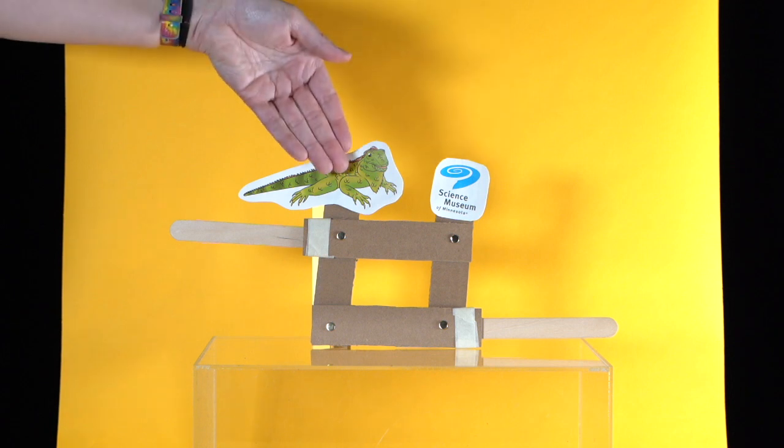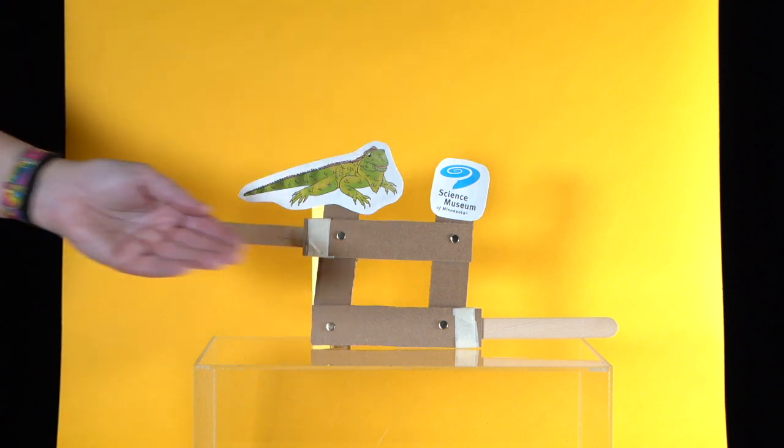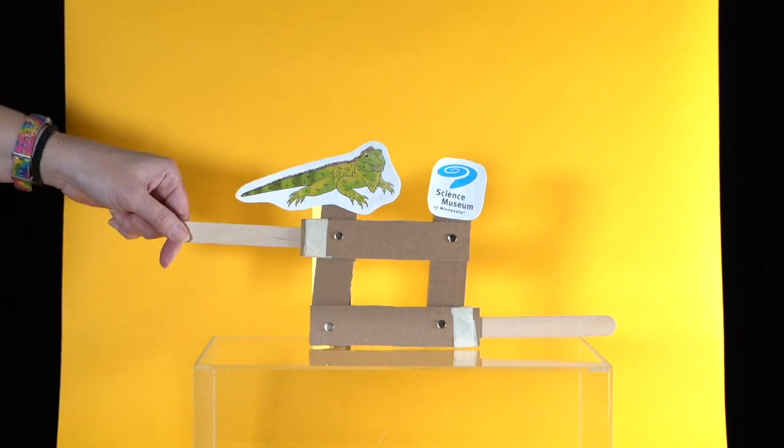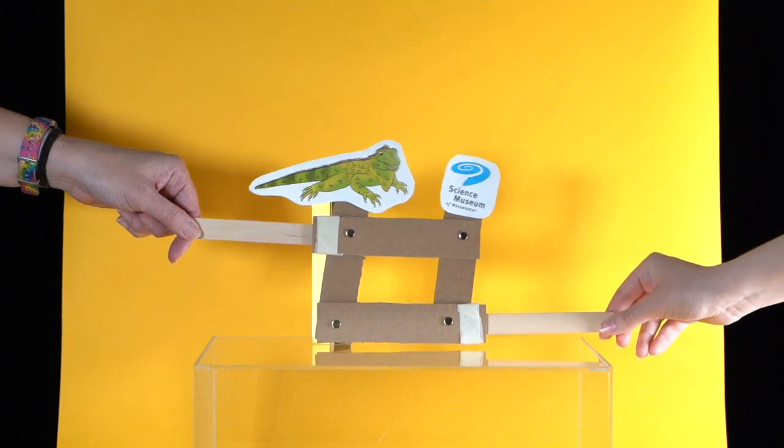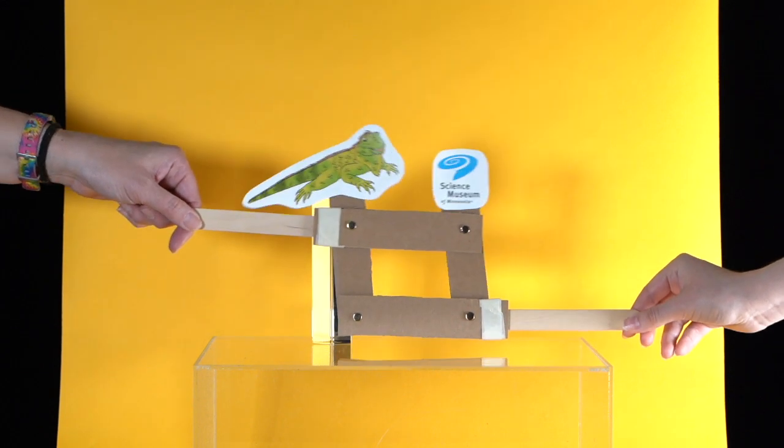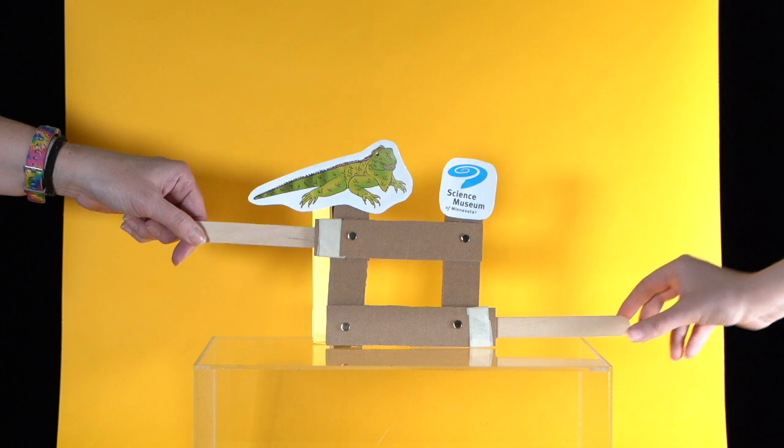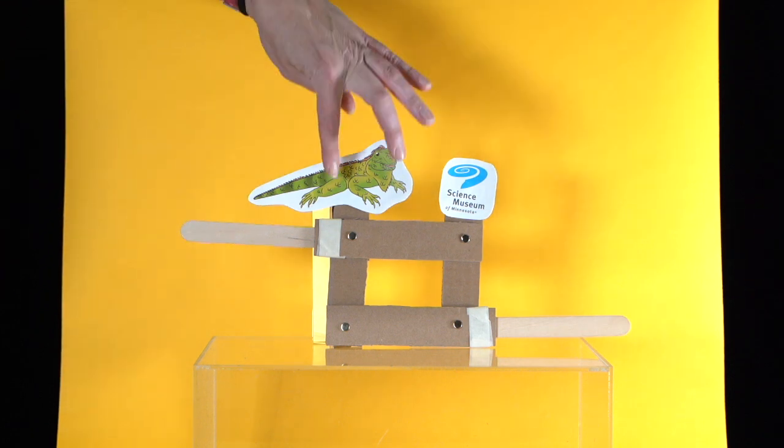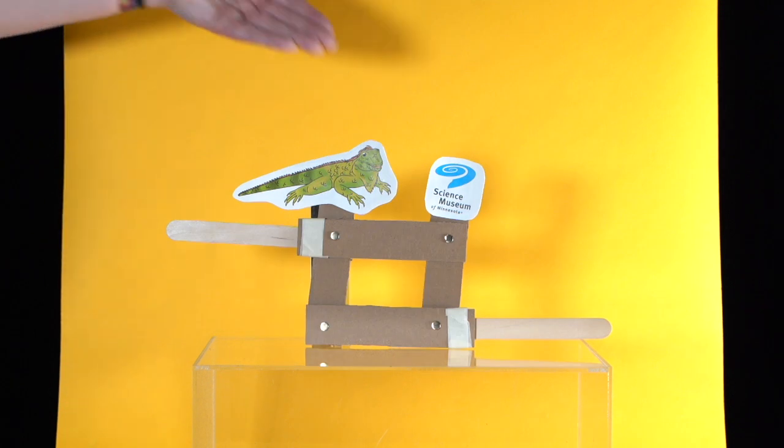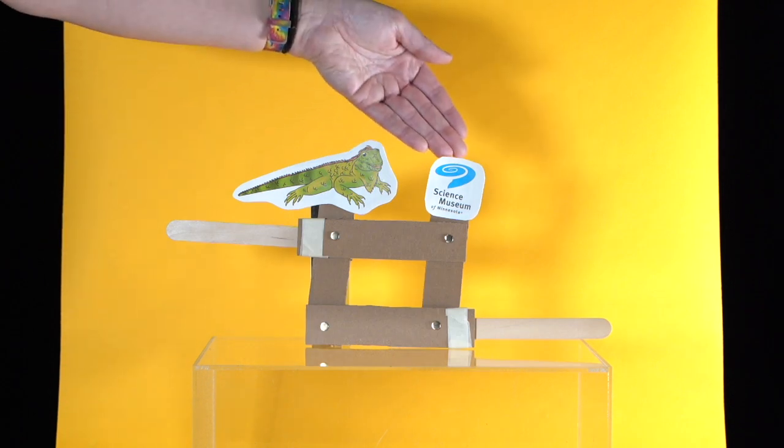These cardboard strips are placed horizontally and are parallel to each other. The craft sticks that are attached to them give you a handle to apply a push and pull force. The other two cardboard strips are placed vertically and are also parallel to each other. Our moving story characters are attached to these strips.